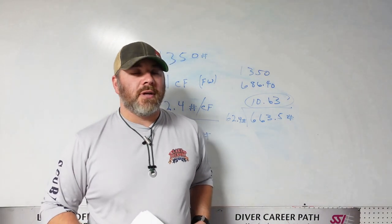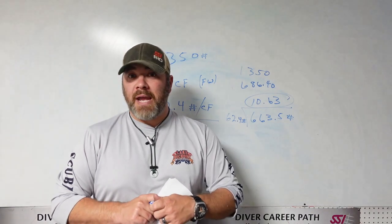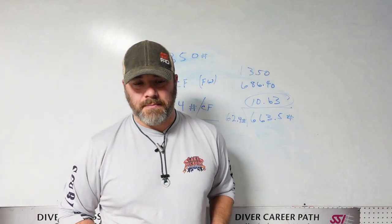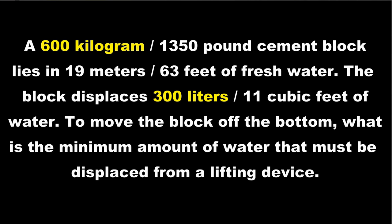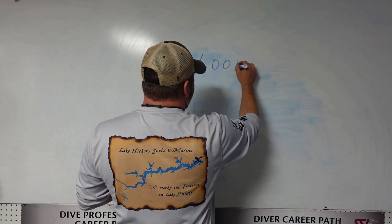Now we're going to take a close look at the question again, but calculate it using the metric system. Pulling out the information we need on the metric side: we need to know the 600-kilogram weight of the object. We also need to know the 300 liters of displacement that the object displaces — 300 liters of water.